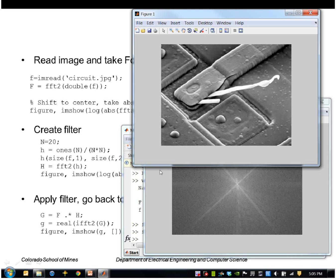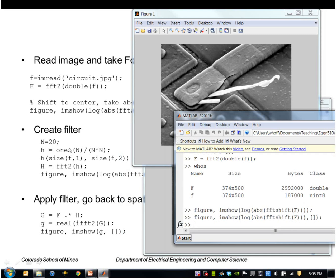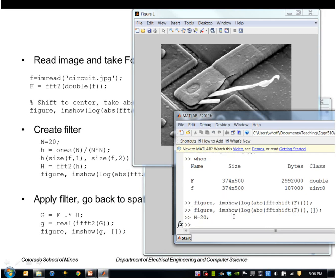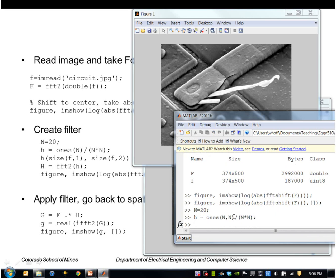Let's say we want to filter it with a box filter of size 20 by 20. We'll create a filter of that size n by n and we'll normalize it so that the total is equal to 1.